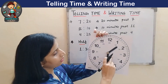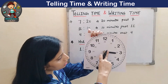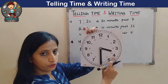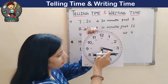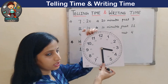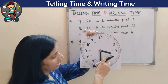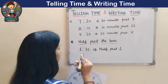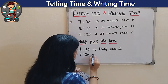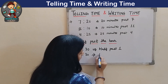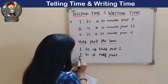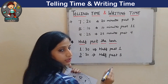Take another example. This time the hour hand is between 3 and 4, and the minute hand is exactly at 30 minutes, or 6. So our time will be 3:30. Or we can write: half past 3.